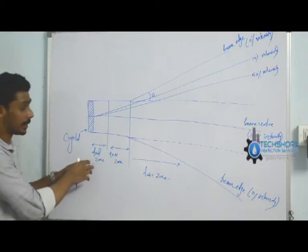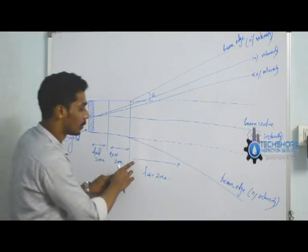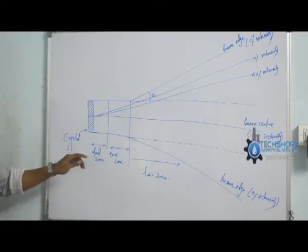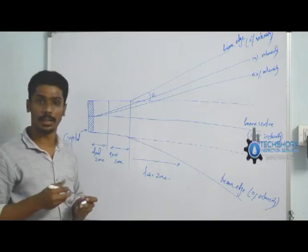It has three different regions: first is dead zone, second is near zone, and third is the far zone. Dead zone is referred to as crystal ringing time. Ringing time means crystal vibration time.